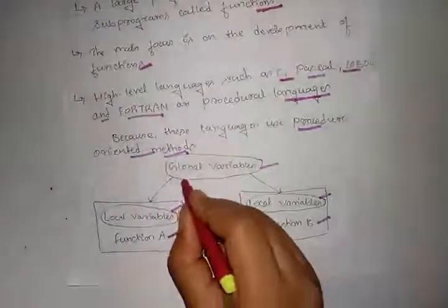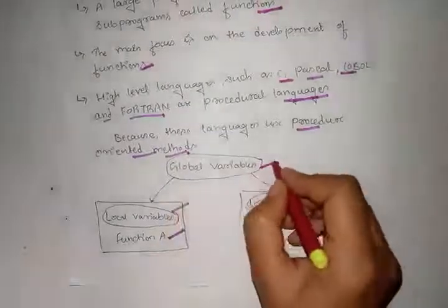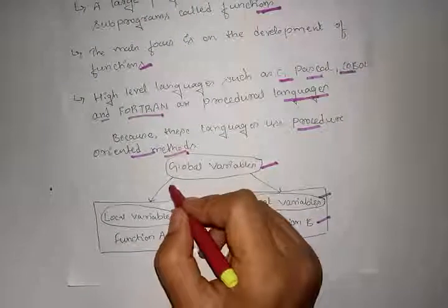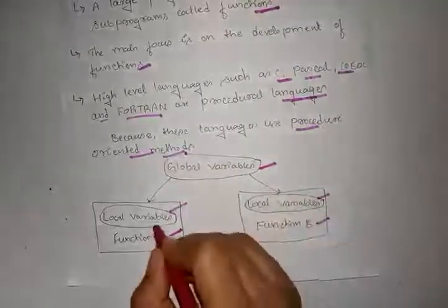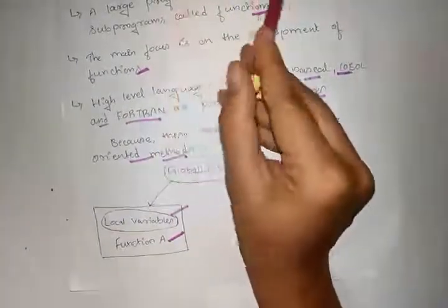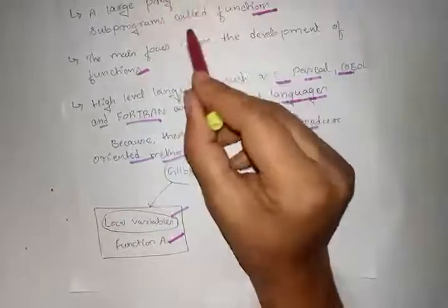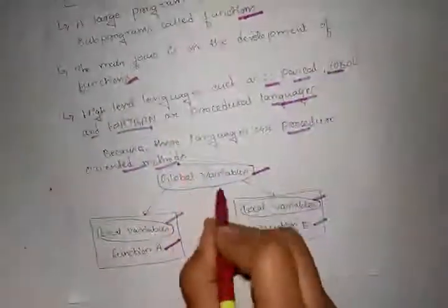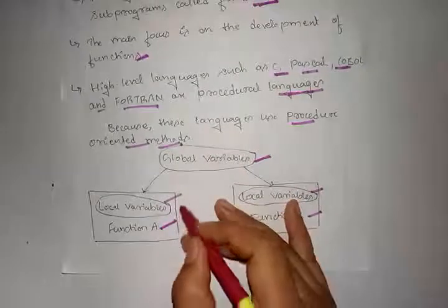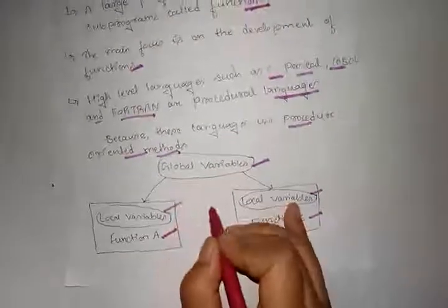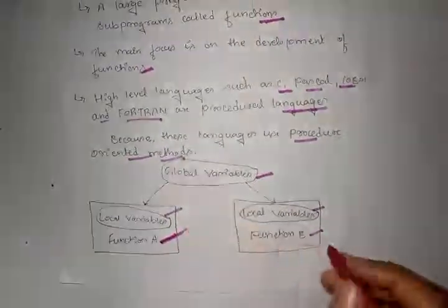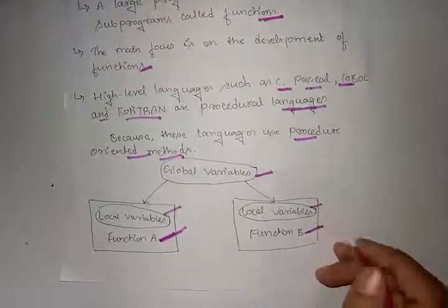For example, in procedure oriented programming, we take a global variable which is divided among functions. The larger program is divided into small programs, and the focus is on Function A and Function B.